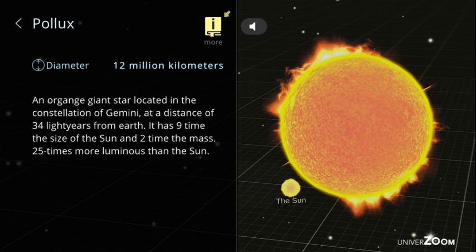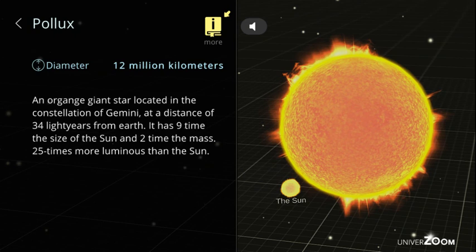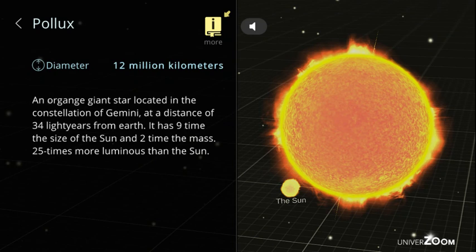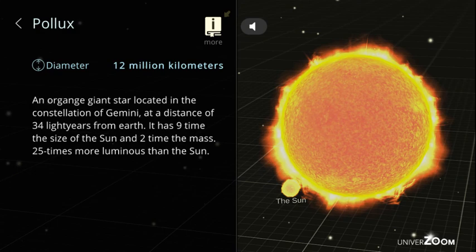Pollux, diameter: 12 million kilometers. An orange giant star located in the constellation of Gemini at a distance of 34 light-years from Earth. It has 9 times the size of the sun and 2 times the mass, 25 times more luminous than the sun.